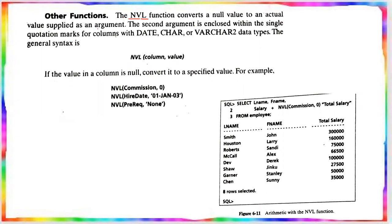In the particular column, if a null value is there, it will be converted using the second argument. As you already know, for date and character types, the value is enclosed within single quotation marks, and numbers are not quoted. This is the general syntax for the NVL function: NVL(column, value).